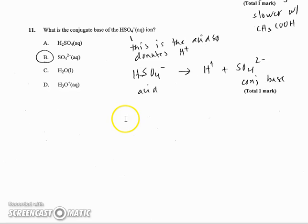And number 11, what is the conjugate base of the HSO4? So that means HSO4 minus has to be an acid. So it needs to donate a hydrogen, which would leave SO4 2- as the conjugate base. Thanks, you guys.